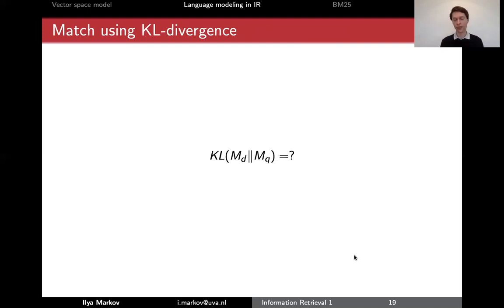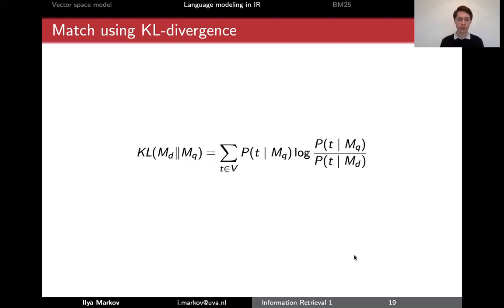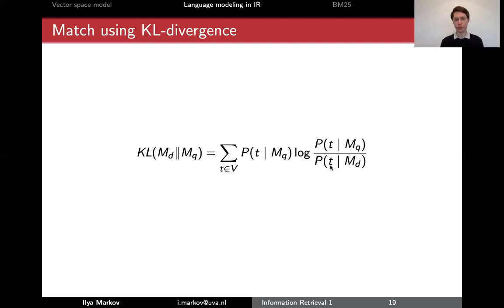There's another more standard and widespread method outside IR to match two distributions, and this is the Kullback-Leibler divergence, which you've probably seen before. This can be computed as term frequency divided by query length and term frequency divided by document length.